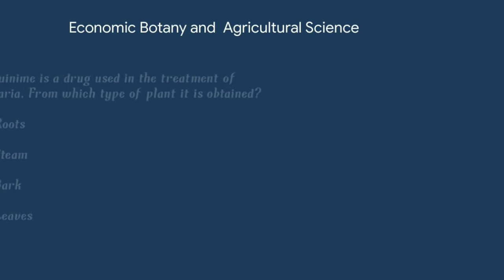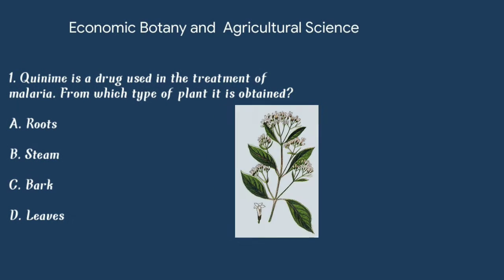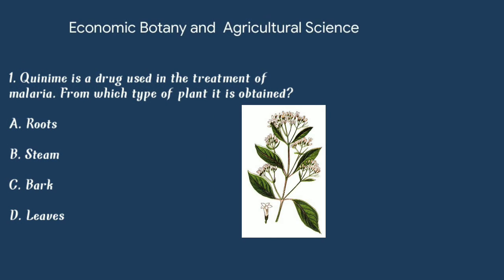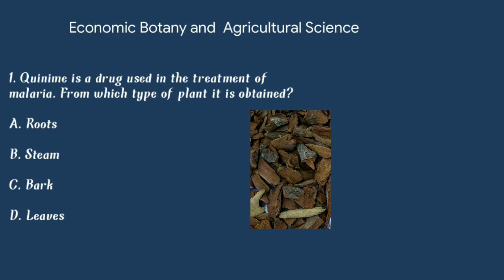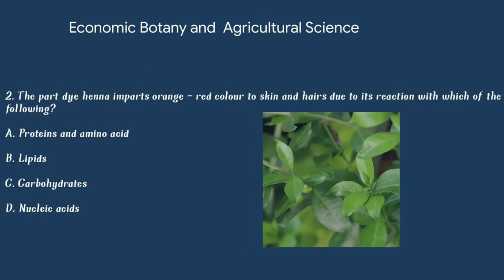Question number 1. Quinine is a drug used in the treatment of malaria. From which part of the plant is it obtained? Option A: Roots. Option B: Stem. Option C: Bark. Or option D: Leaves. The answer is option C: Bark.